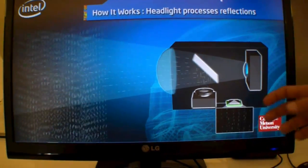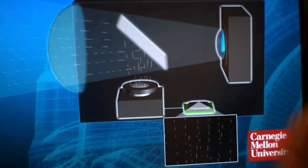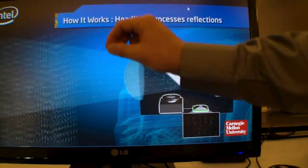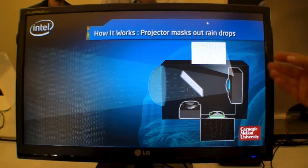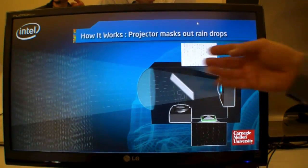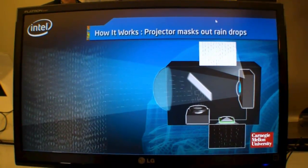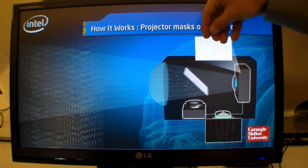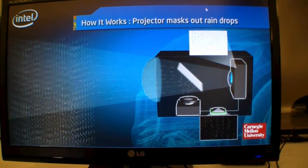With a processor algorithm, we're able to predict those future locations of where the rain is going to be falling through that path, and then share that information with the projection system so that black spots are created where we're actually taking away the light in specific locations where the rain is predicted to fall.